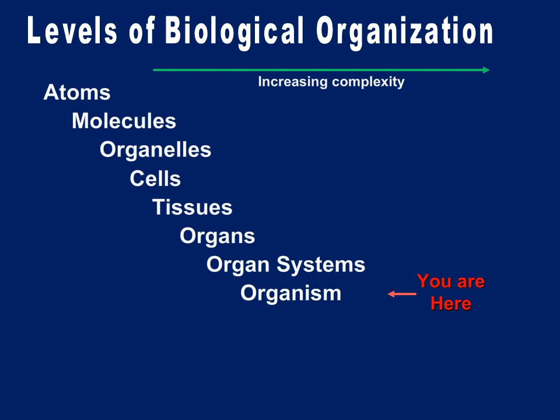Now that we've covered the different approaches to studying anatomy and physiology, we're going to talk about some very basic core concepts. The first is to learn the levels of biological organization. Living organisms such as yourself, a cat, or a dog are fairly complex — they're made up of smaller parts such as organs, which are in turn made up of cells and tissues, which themselves are made up of smaller parts. We're going to go through each of these levels.